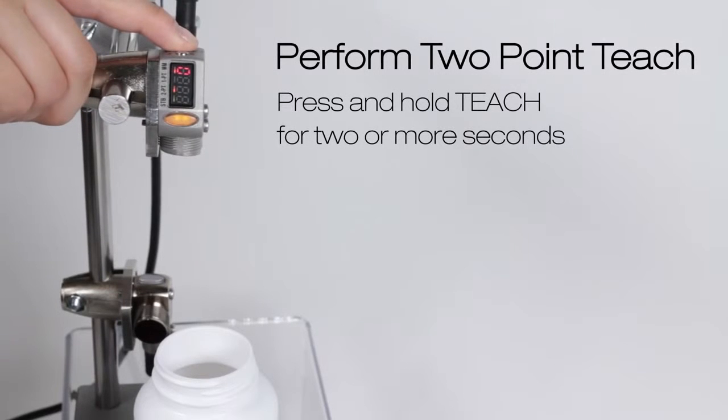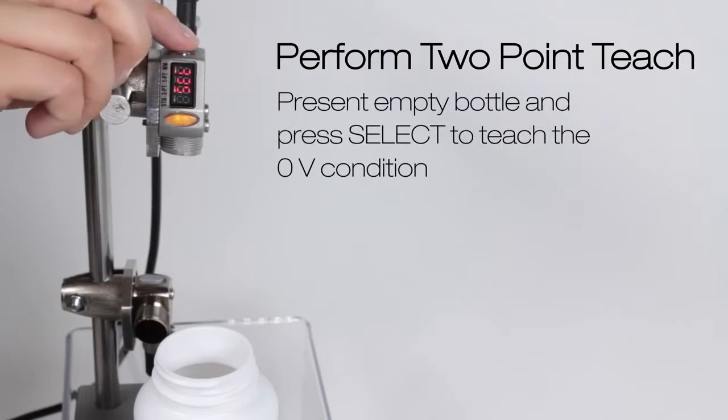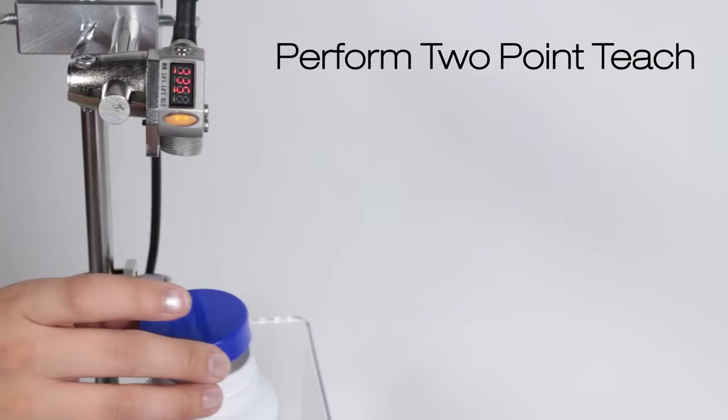To program the sensor in two-point teach mode, hold the teach button for two or more seconds. Set zero-volt flashes, present an empty bottle as the zero-volt condition, and press select.